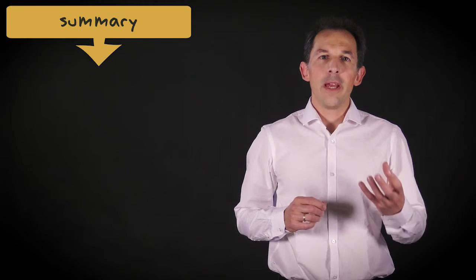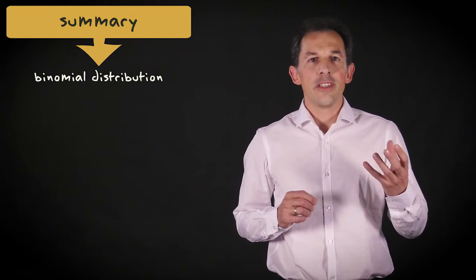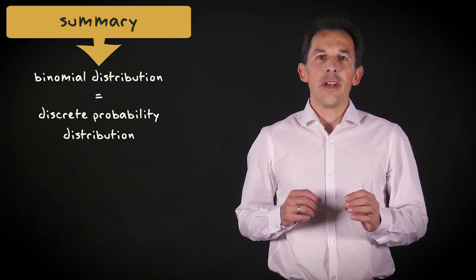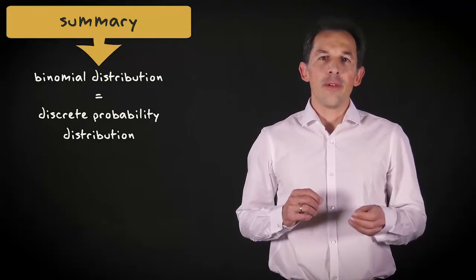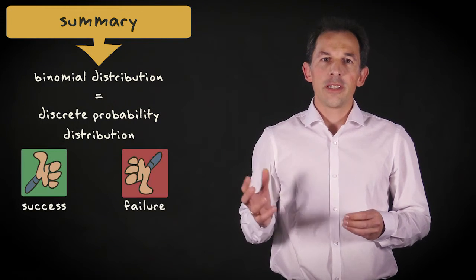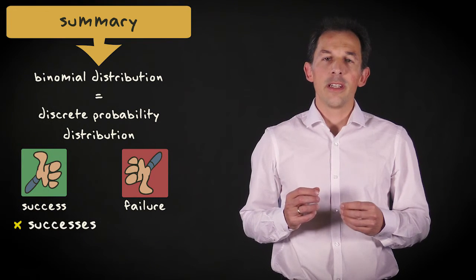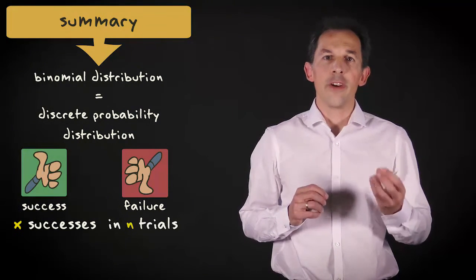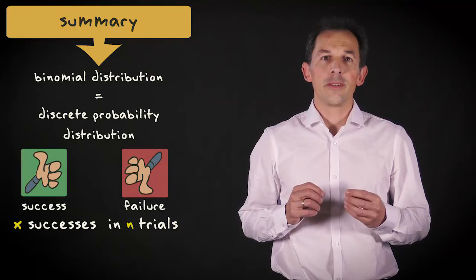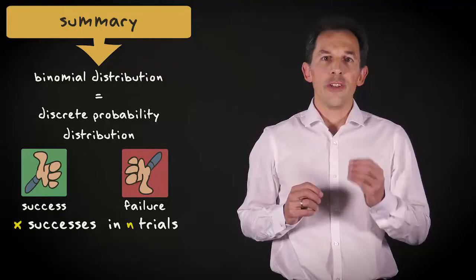Let me summarize what I have explained in this video. The binomial distribution is a discrete probability distribution that is used when a random variable can have two mutually exclusive outcomes, success and failure. It gives the probability of observing x successes in n outcomes of the random variable, so-called trials, with the probability of success on a single trial denoted by p.